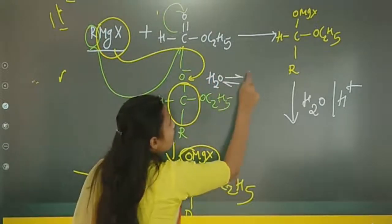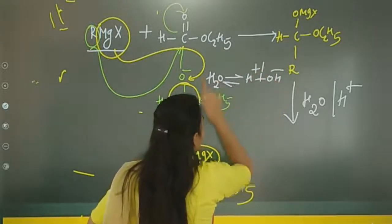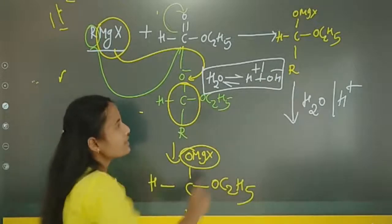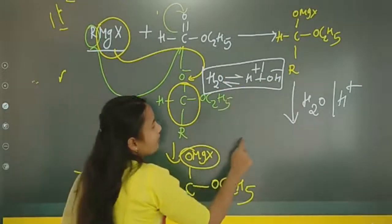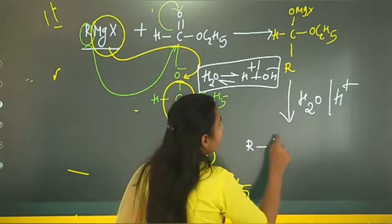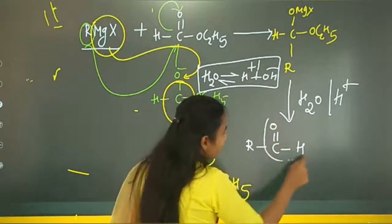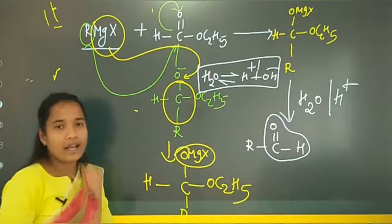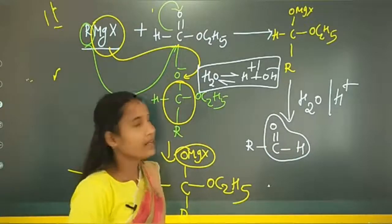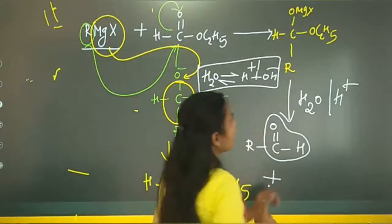On hydrolysis, water dissociates to give H⁺ and OH⁻. This converts the intermediate to give R-C(=O)-H, which is the aldehyde group CHO. So this product is known as an aldehyde.